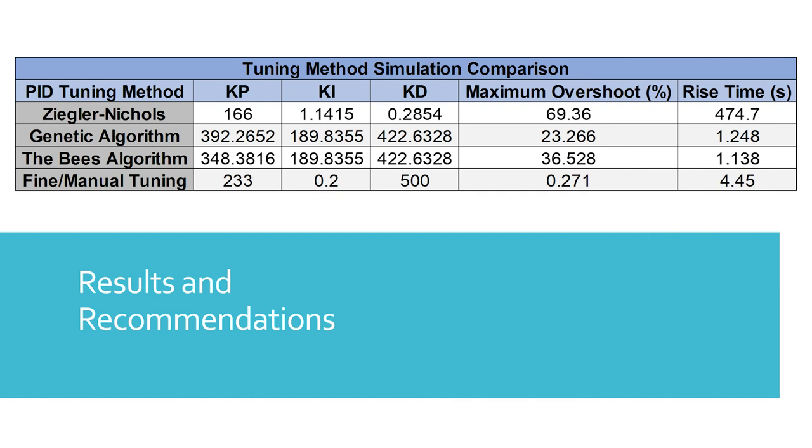The genetic and artificial bee colony algorithms are both reasonable applications, with the genetic algorithm resulting in a lower maximum overshoot of 23.266% as compared to the 36.528% overshoot introduced by the artificial bee colony algorithm. As depicted previously, the Ziegler-Nichols tuning method yielded the worst results, with a maximum overshoot of 69.3% and an extremely large rise time of 474.7 seconds.